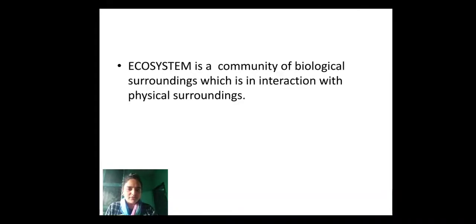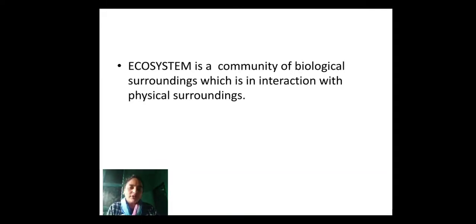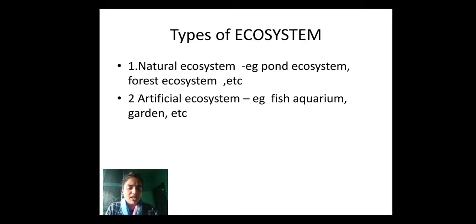Interaction between living organisms — like how plants and animals interact with each other. We have two types of ecosystem: number one, natural ecosystem, and number two, artificial ecosystem.